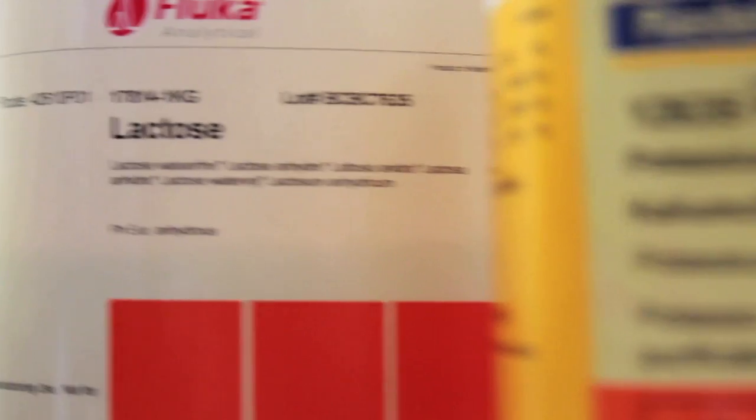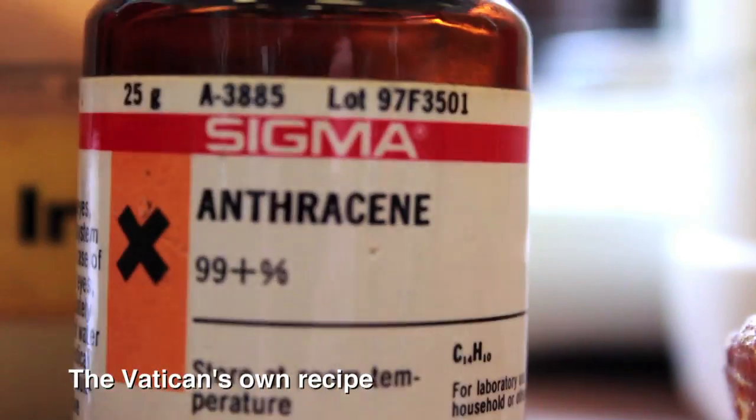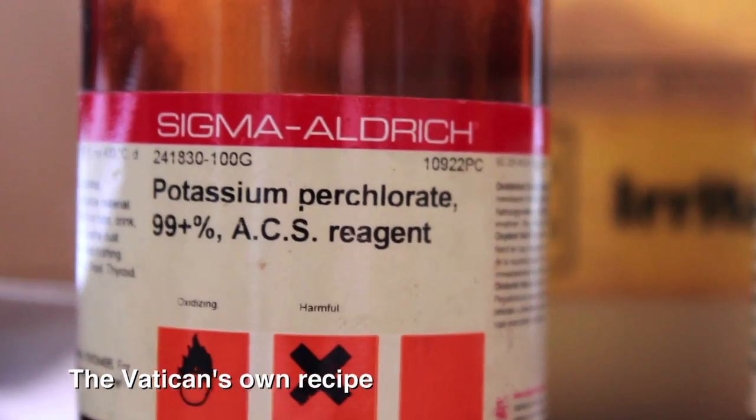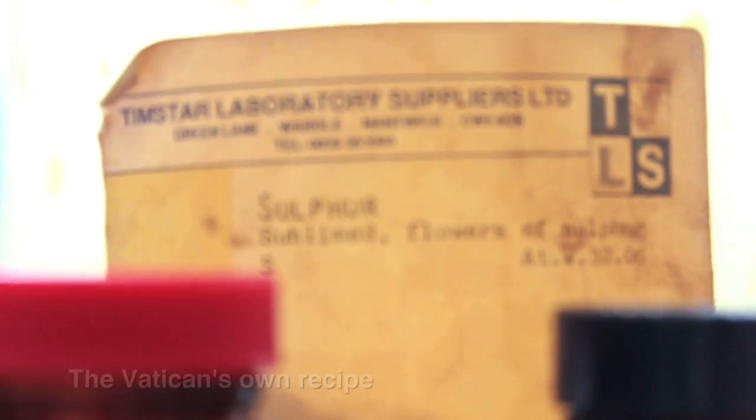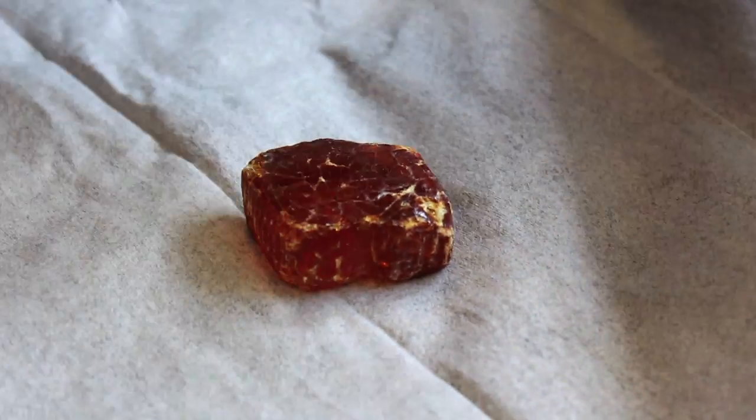We have here all of the ingredients to make either black or white papal smoke. We have lactose, anthracene, potassium perchlorate, sulfur, potassium chlorate, and some pine resin which is this stuff here that comes out of a tree.